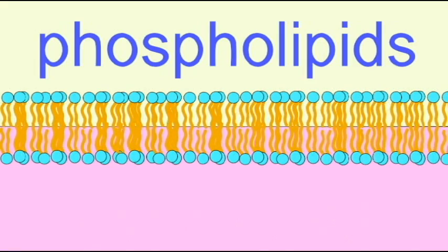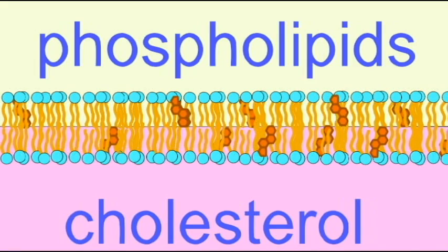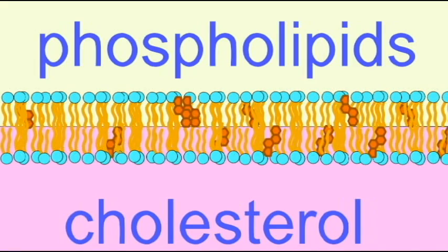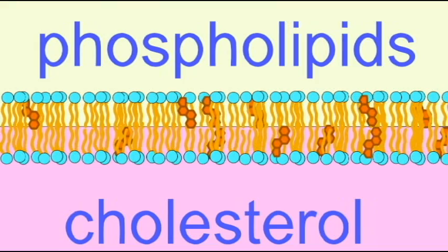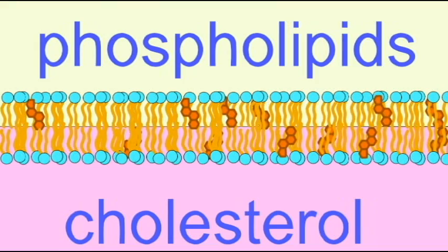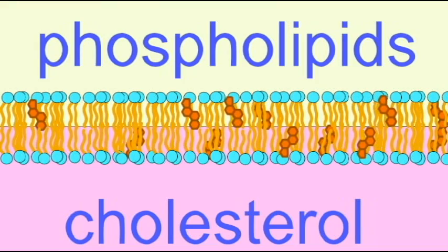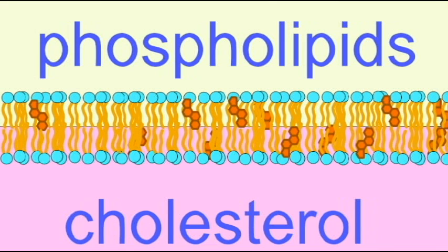Very early in the history of life, organisms began to use cholesterol. Among other roles, it is an essential component of the cell membrane, which prevents the membrane from being too fluid.